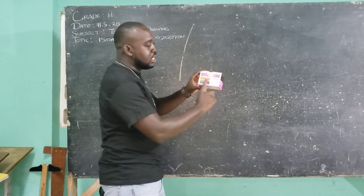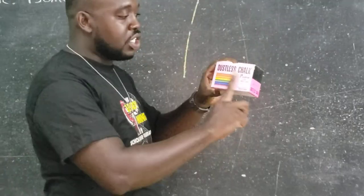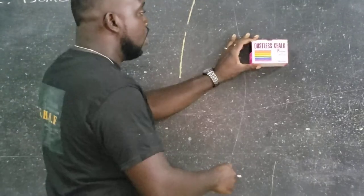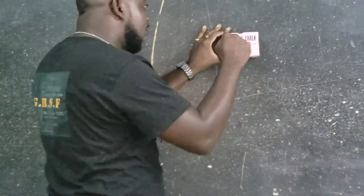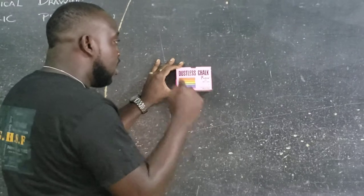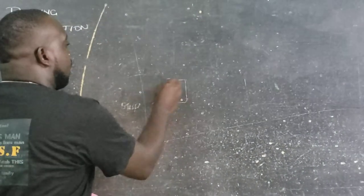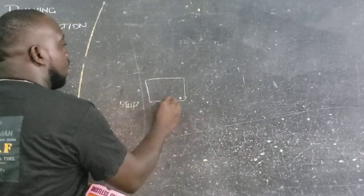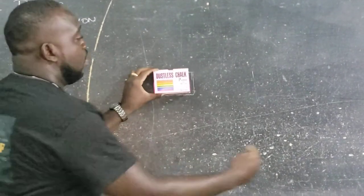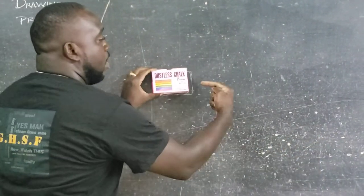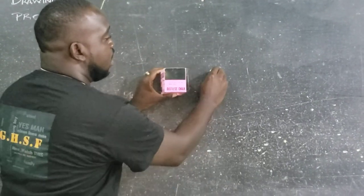Let me use this dustless chalk to label this section as the front elevation. If viewed from that direction, at 90 degrees — if you are looking at the object at 90 degrees — this is what you will actually see. And if you look at the object from the side, which is an end elevation, this is what you will actually see.